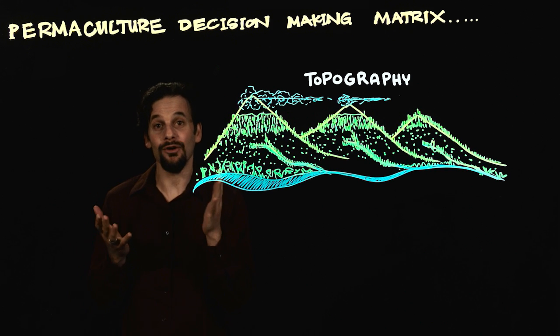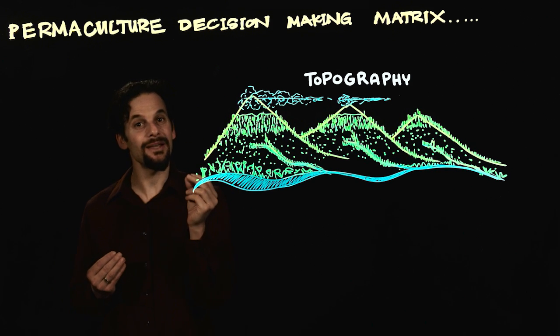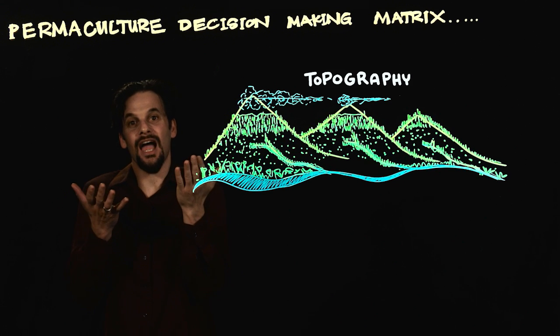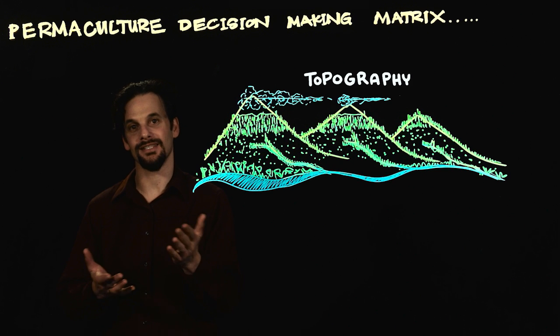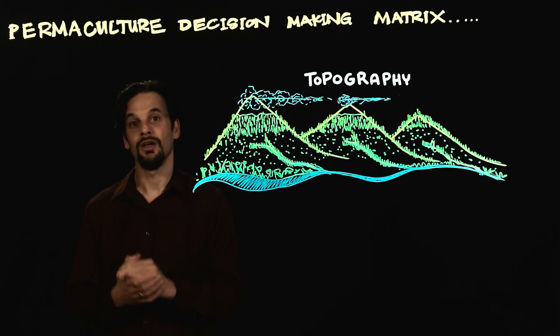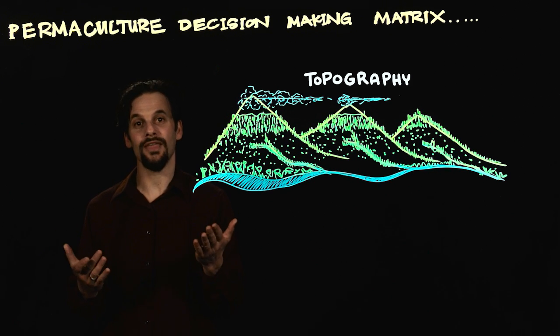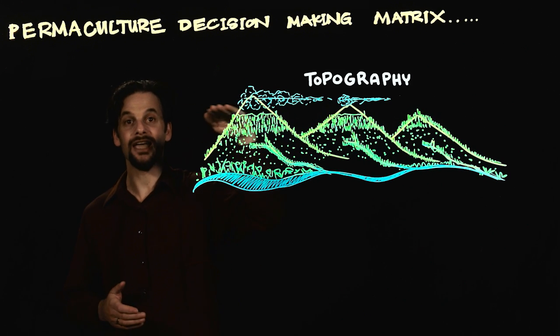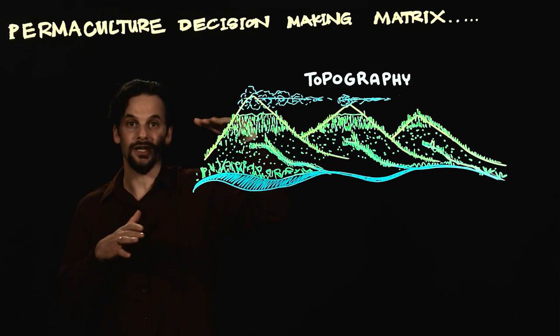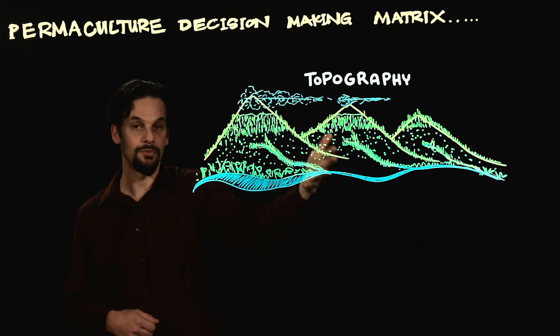Understanding the patterns of water movement is a key component to designing a permaculture system because the design for water on a site provides the underlying bones that the rest of the system is structured around. We design for water in a way that creates abundance and keeps water in its place of highest potential so we can use it again and again as it moves through our site.